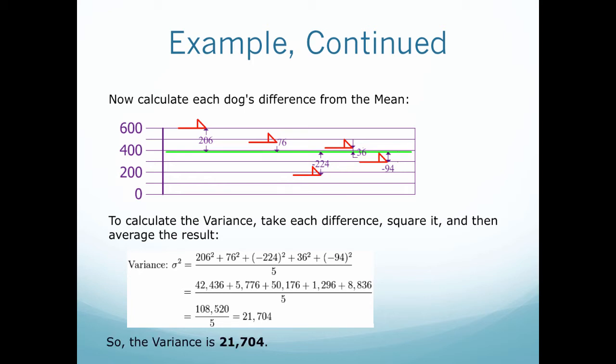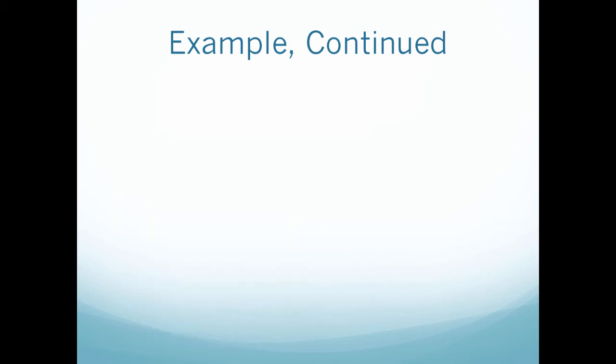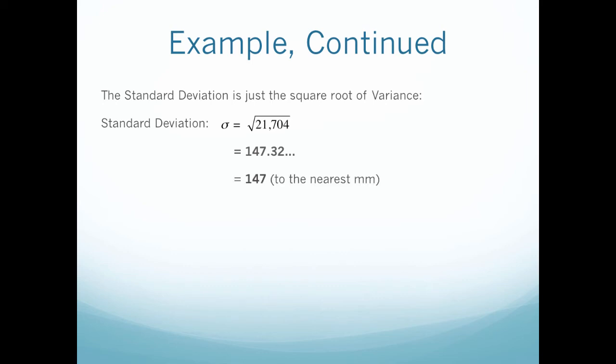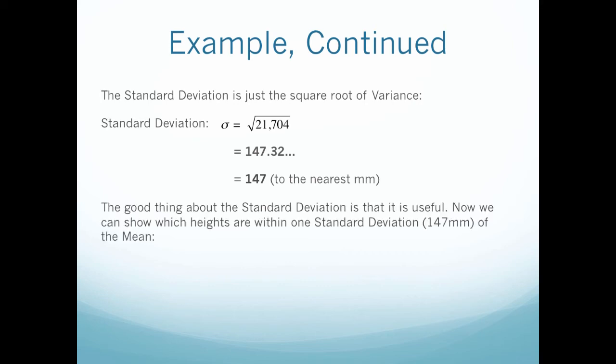So the variance is 21,704. The standard deviation is just the square root of the variance, so that's a fairly easy calculation. So the standard deviation would be equal to sigma equals the square root of 21,704, which would be equal to 147.32 and change, which we would then round to the nearest millimeter, which would be equal to 147.